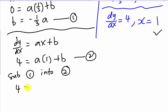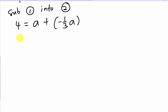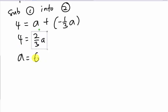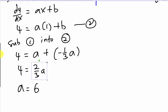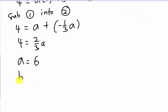I substitute the first equation into the second, just like simultaneous equations. So 4 equals a plus (negative 1/3 a), which gives 4 equals 2/3 a. Solving, a equals 6. Substituting back into the first equation: b equals negative 1/3 times 6, so b equals negative 2.